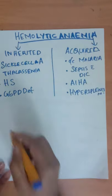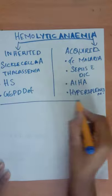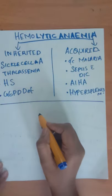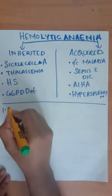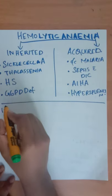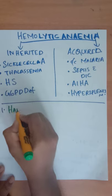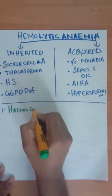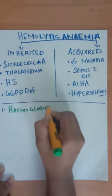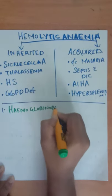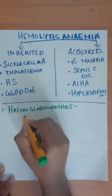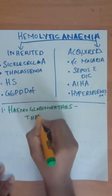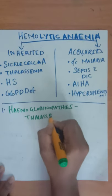There are four reasons why RBC destruction may occur. The first is due to hemoglobinopathies — examples being thalassemia and sickle cell anemia.